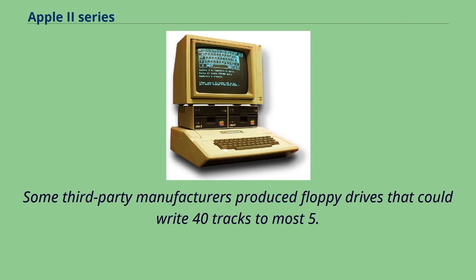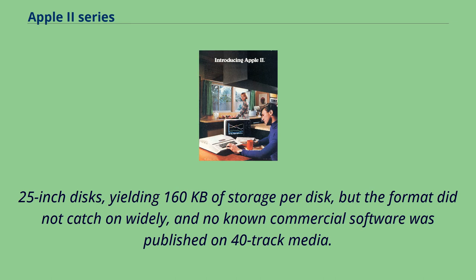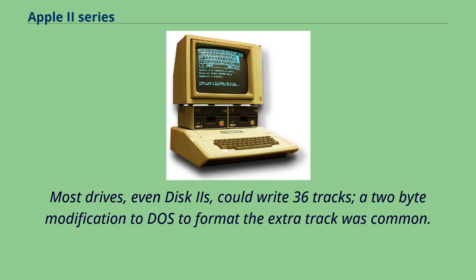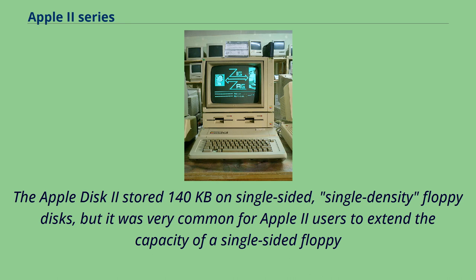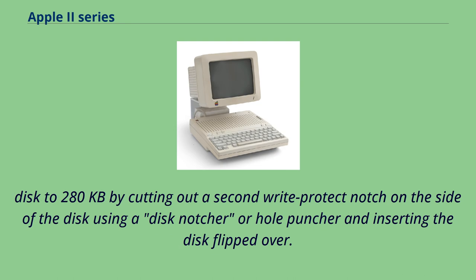Most drives, even Disk IIs, could write 36 tracks, and a 2-byte modification to DOS to format the extra track was common. The Apple Disk II stored 140 kilobytes on single-sided, single-density floppy disks. It was very common for Apple II users to extend the capacity to 280 kilobytes by cutting out a second write-protect notch on the side of the disk and inserting it flipped over. Double-sided disks with notches on both sides were available at a higher price.